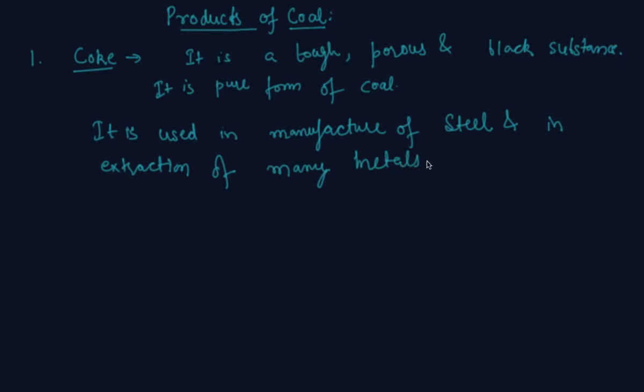So these type of questions might come into exam in which you will be asked to write the products of coal and its usage. So first what you will write is the first product is coke, and first you will write it is a tough, porous and black substance and it is also the pure form of coal. And what is the usage of the coke? It is used in manufacture of steel and in extraction of many metals.